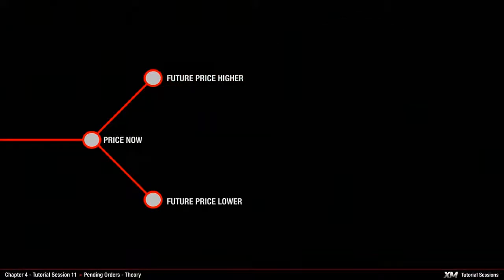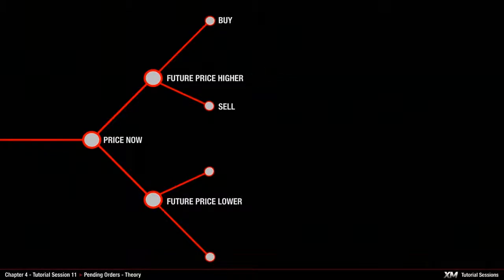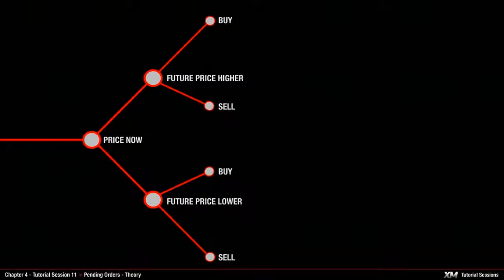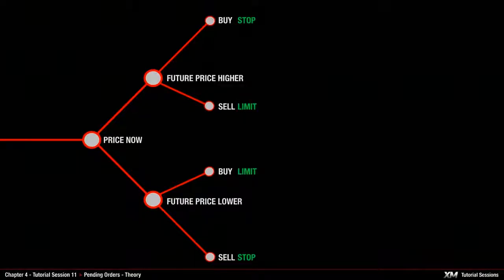This presents you with the choice of four possible types of pending orders. If you expect the future price to get higher than the price now, you should decide about placing a buy order, or once it reaches the future price and it starts to fall, you should place a sell order. If you expect the future price to be lower than the price now, you should assess if the price will continue going down and place a sell order, or once it reaches the lower future price and it starts to rise, you should place a buy order. These four pending order types are called buy stop, sell limit, buy limit, and sell stop.